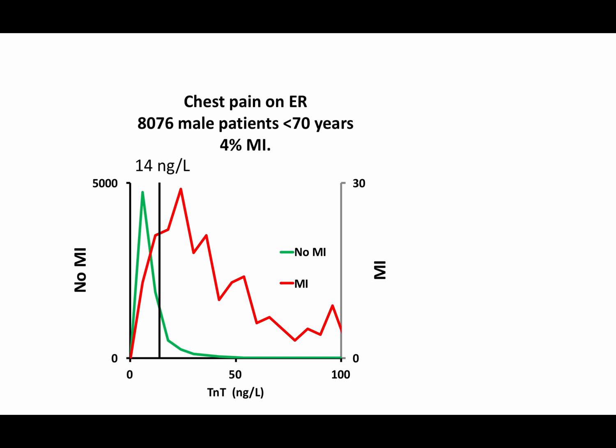Both ROC-optimized cutoffs and cutoffs based on healthy levels of Troponin T are problematic. It is better to understand how to estimate the risk of myocardial infarction in your patient. Here I will describe two statistical tools to evaluate Troponin T-levels, and then combine these tools in a single plot that allows me to visualize the risk of myocardial infarction and its cost in false positives.